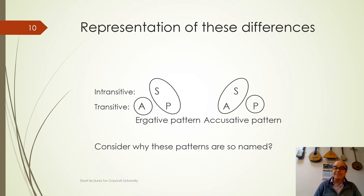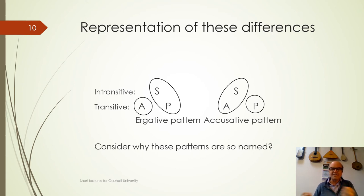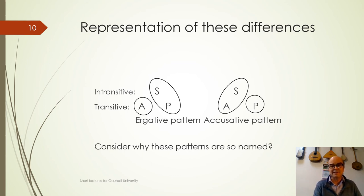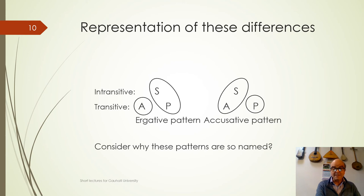When a language has an ergative pattern, S and P are marked the same, but A is different. When a language has an accusative pattern, A and S are the same, but P is different. These patterns are both named after the one that is different from the other two — the first is named after the A, the ergative; the second is named after the P, the accusative. The S, the subject of the intransitive verb, aligns with one or the other. You might start thinking about Assamese and see what happens there.